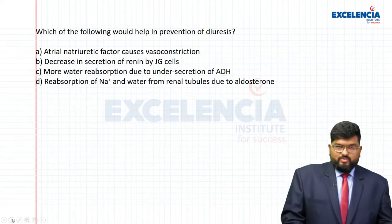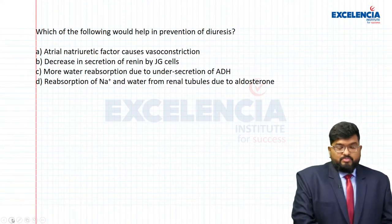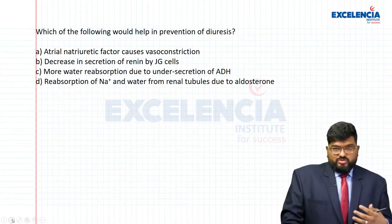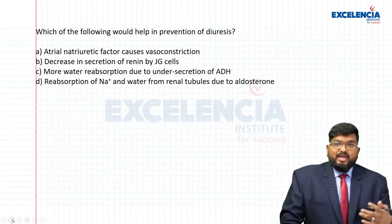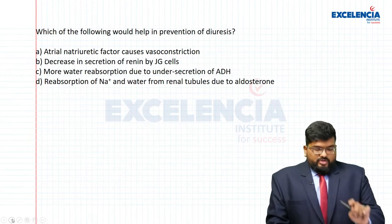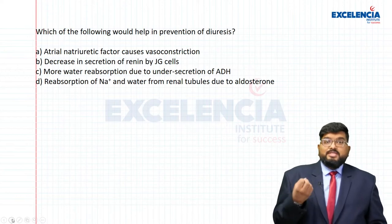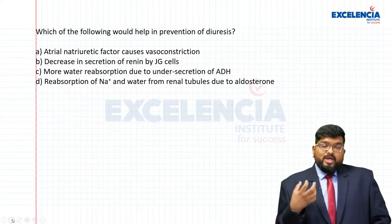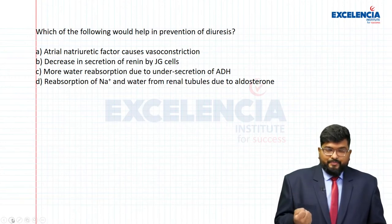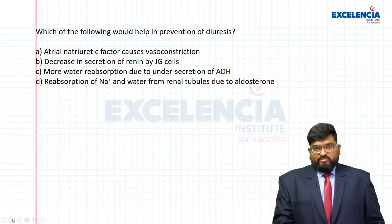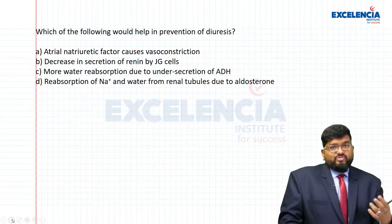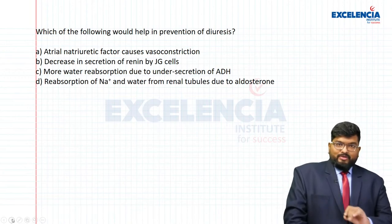The first question we are discussing is from last year's NEET paper: which of the following would help in prevention of diuresis? Recall that diuresis is the process of urine formation. Substances like tea and coffee are known as diuretics because they cause urination. Prevention of diuresis means this occurs during a condition where the body is suffering from lower water concentration. In this case, the osmo receptors trigger a mechanism called the renin-angiotensin mechanism.